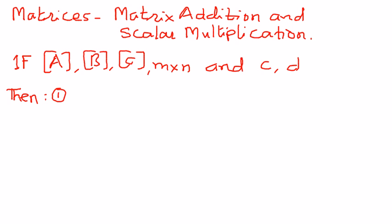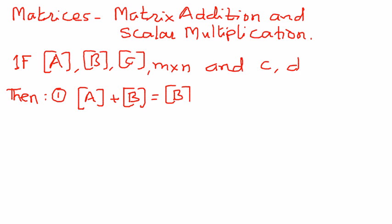The first property we want to see is: if we have matrix A and matrix B, and matrix A and matrix B have elements within them, then when we add these two matrices in this order, it is the same as adding matrix B plus matrix A. This is called the commutative property of addition, and it is very similar to the property we have seen in basic algebra.